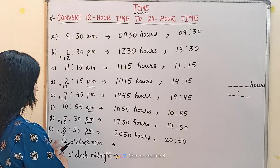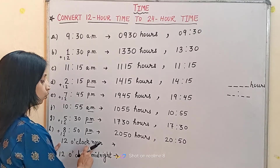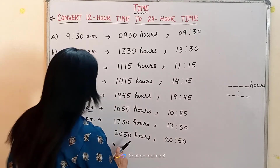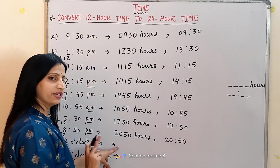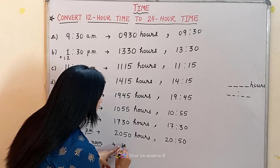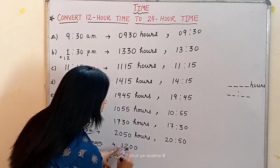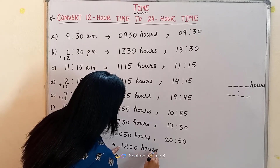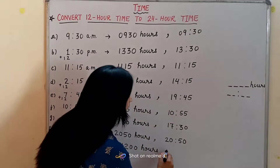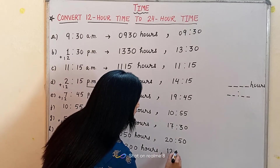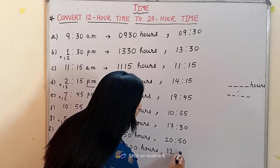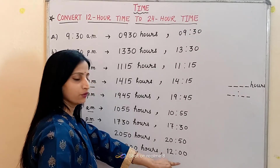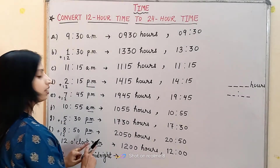Now the next one is 12 o'clock noon. We write it in 4 digits — we write 12 and then two zeros, giving us 1200 hours. In the colon form, we write 12, put the colon, and write 00, since there are no minutes. So it is 12 hours 0 minutes, or 12 o'clock noon.